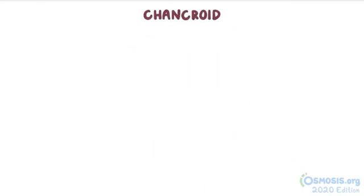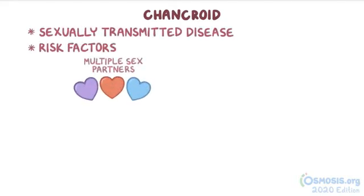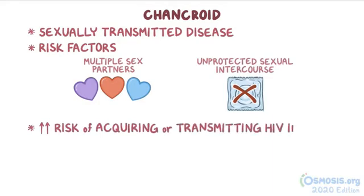Haemophilus ducreyi causes a disease called chancroid, which is a sexually transmitted disease. Risk factors include multiple sex partners or unprotected sexual intercourse. Also, people with chancroid have a higher risk of acquiring or transmitting HIV infection.